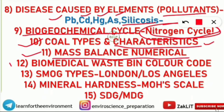The twelfth topic is biomedical waste bin color codes. For example, anatomical waste is segregated and kept in the yellow color bin. Sharp waste are disposed of in white or blue color bins, and there are also black and red bins. You should know which bin is used for which kind of biomedical waste disposal.